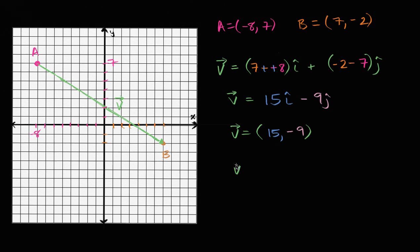You could even write it like this. Vector V is equal to, you could write it as a column vector. You could write it as 15, negative nine. So depending on what book or notation and what class you're in, you might see all of these things. These are all the same vectors that you know and love.